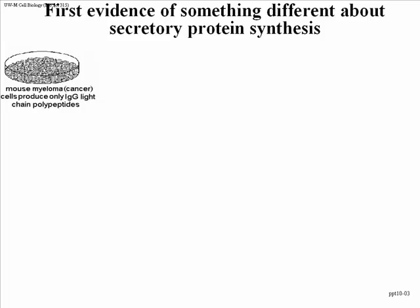Various researchers were studying a cancer of the mouse — a myeloma, an immune system cell. In this mouse cell, these cells developed to produce only one of the polypeptide chains of an antibody molecule, specifically the smaller one called the IgG light chain. This IgG light chain was produced by cells in culture and secreted into the medium. So if you grew these cells up, after a period of time you could collect the medium and observe the IgG light chain, which was the predominant secretory product of this cell.